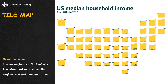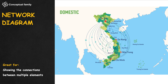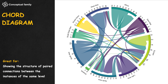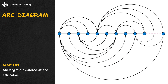A network diagram shows connections between multiple elements — a famous application is the airline's network connection map. A chord diagram is like an airline's network connection map, except that all destinations form a circle.